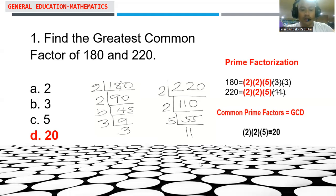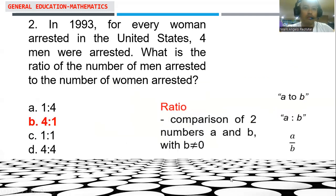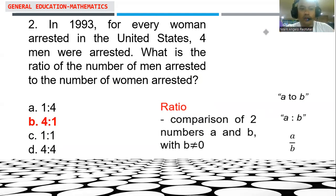Let's proceed to problem number two. In 1993, for every woman arrested in the United States, four men were arrested. What is the ratio of the number of men arrested to the number of women arrested? This is an application of ratio — the comparison of two quantities.